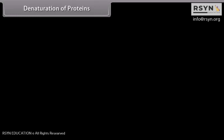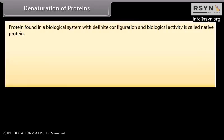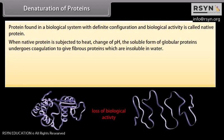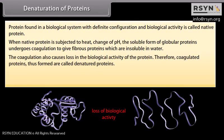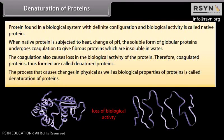Protein found in a biological system with definite configuration and biological activity is called native protein. When native protein is subjected to heat or change of pH, the soluble form of globular proteins undergoes coagulation to give fibrous proteins which are insoluble in water, causing loss in biological activity. Such coagulated proteins are called denatured proteins. The process that causes changes in physical as well as biological properties of proteins is called denaturation, for example coagulation of egg on boiling and curdling of milk.